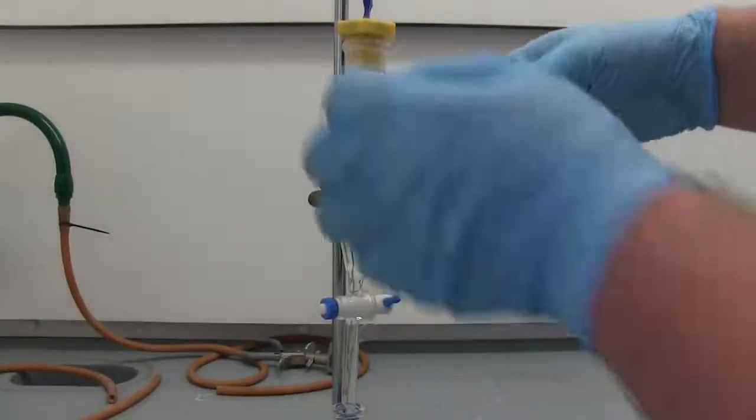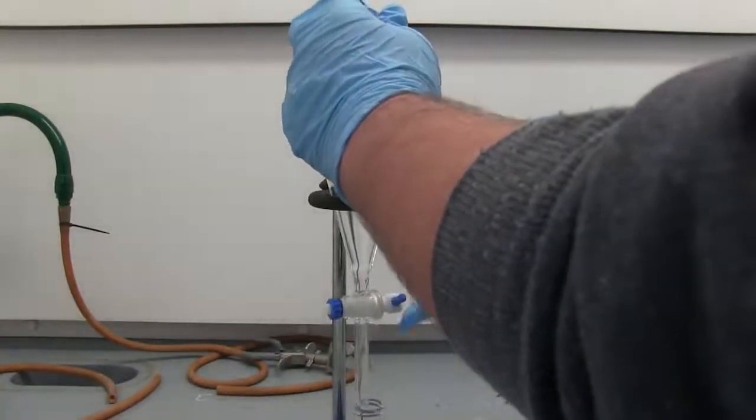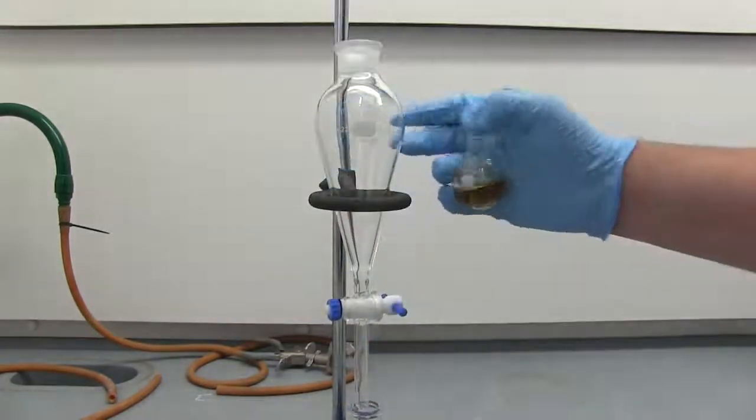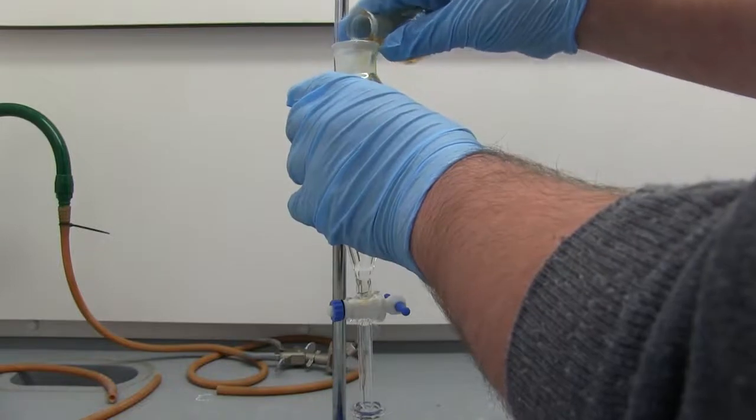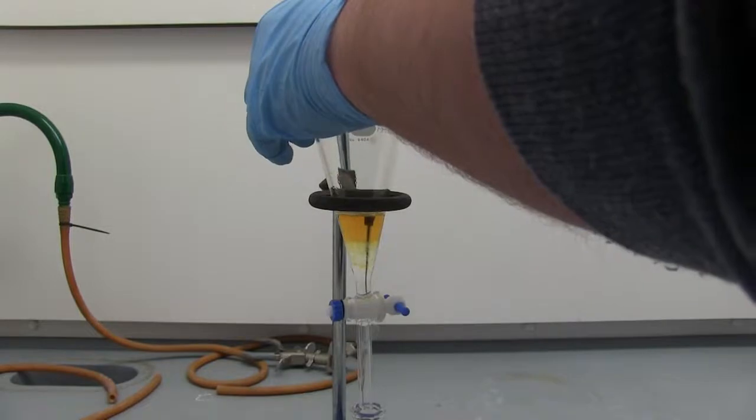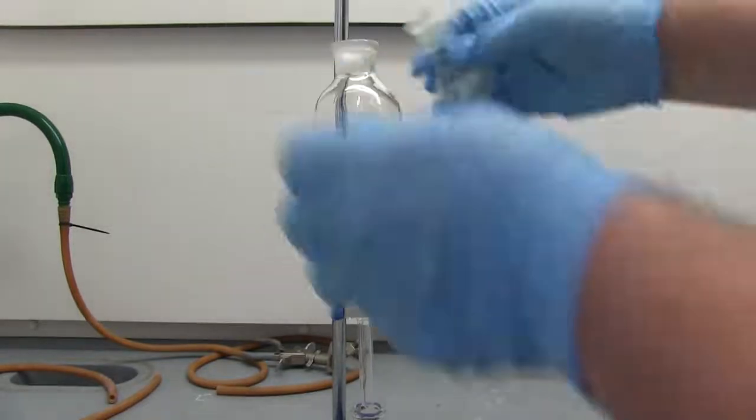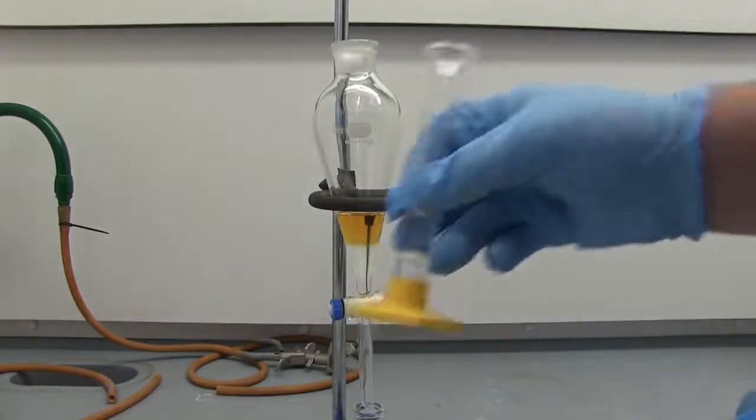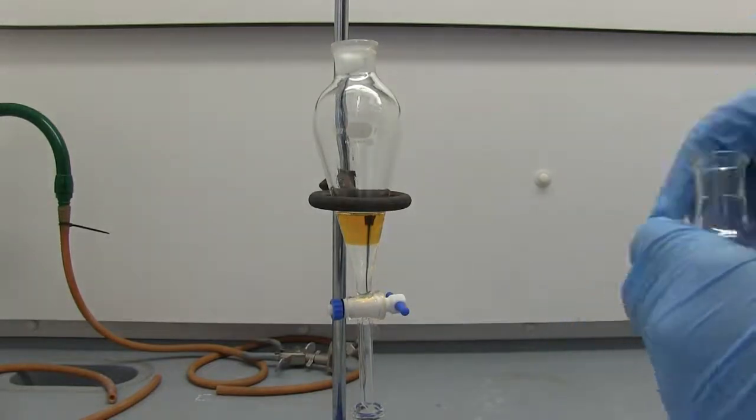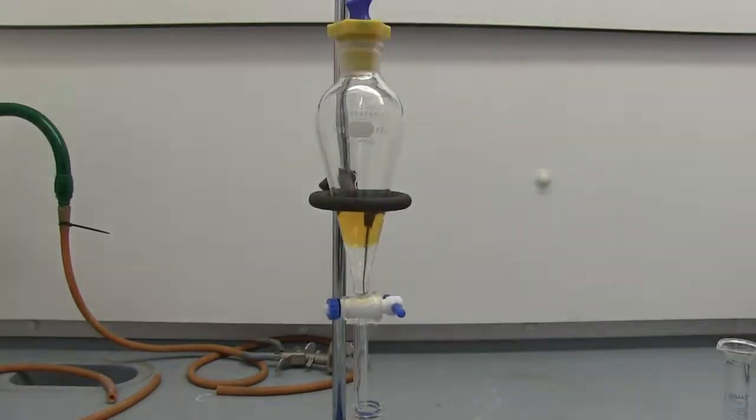All right, so now we've got our mixture. We're going to pour it into the separatory funnel, make sure it's closed. All right, and we've got 5 mL of DCM we're going to use to help transfer the solution.